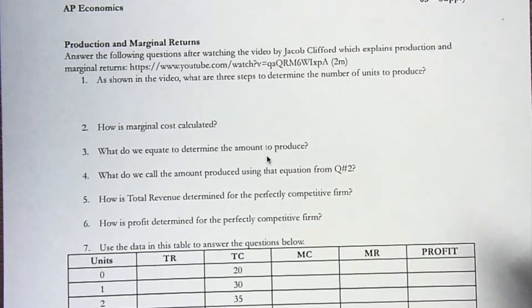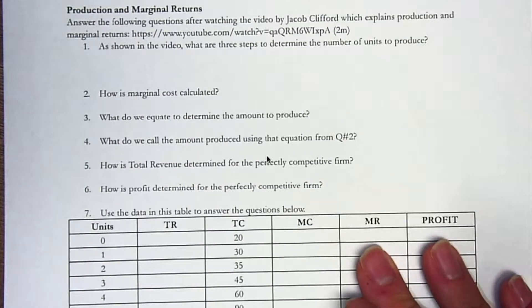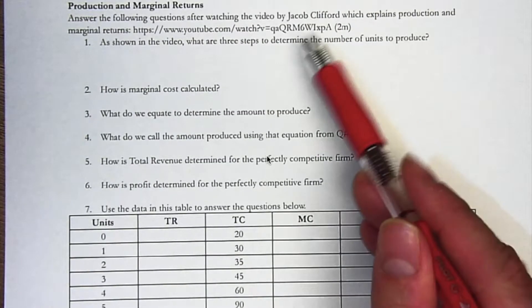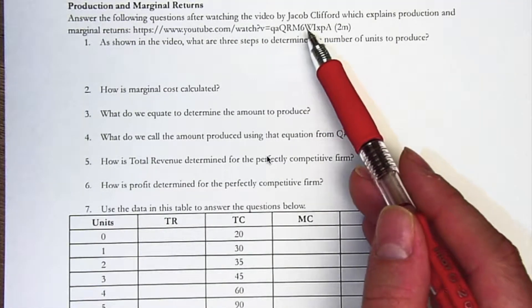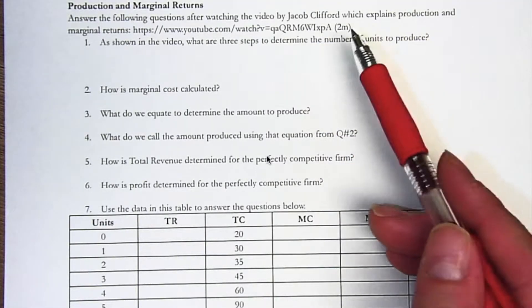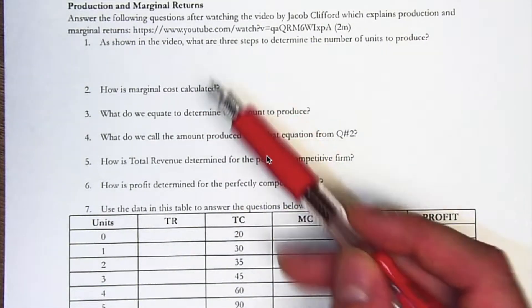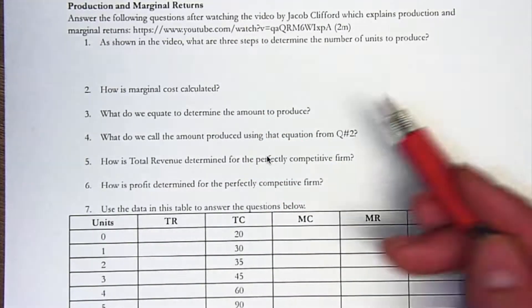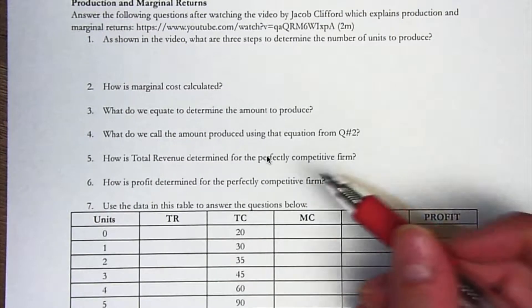With this video, we're going to talk a little bit more about production and marginal returns, and we're going to try to do some practice problems here in this table. The first thing I encourage my students to do is watch that Jacob Clifford video where he explains the ideas of production and marginal returns and how to figure out how much should be produced.